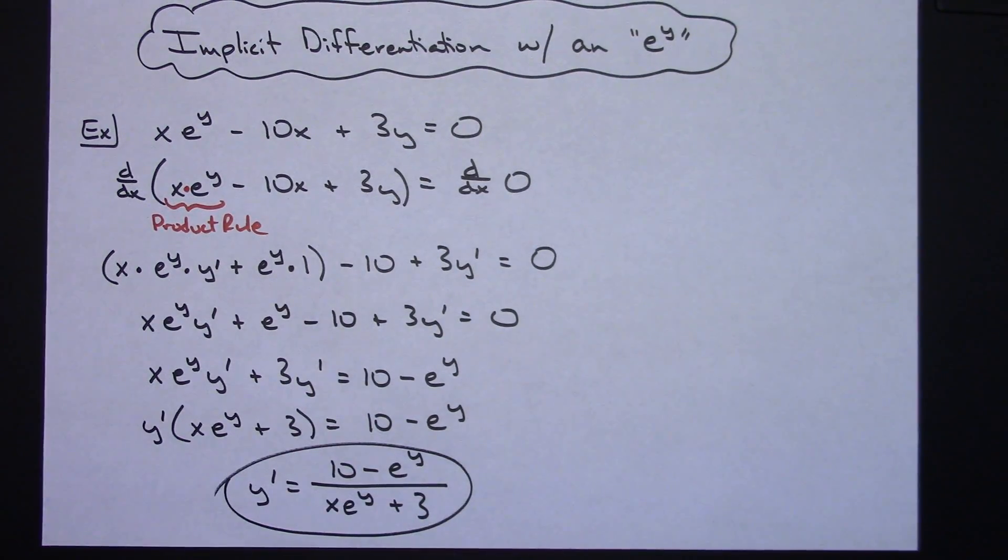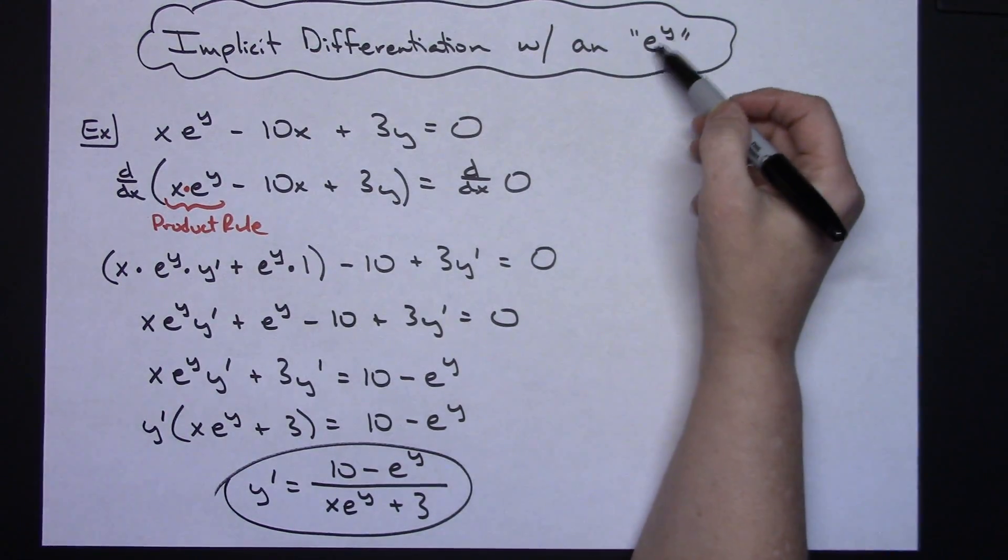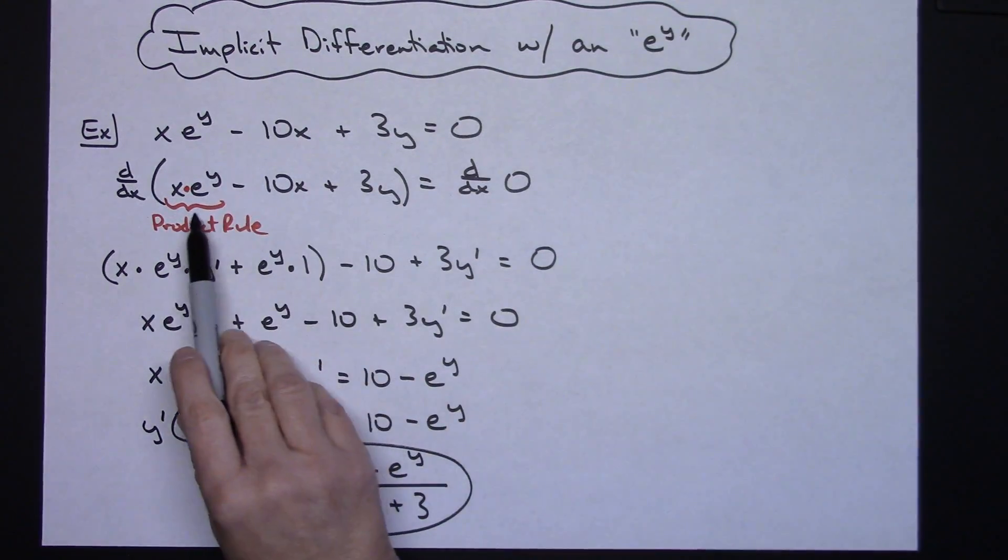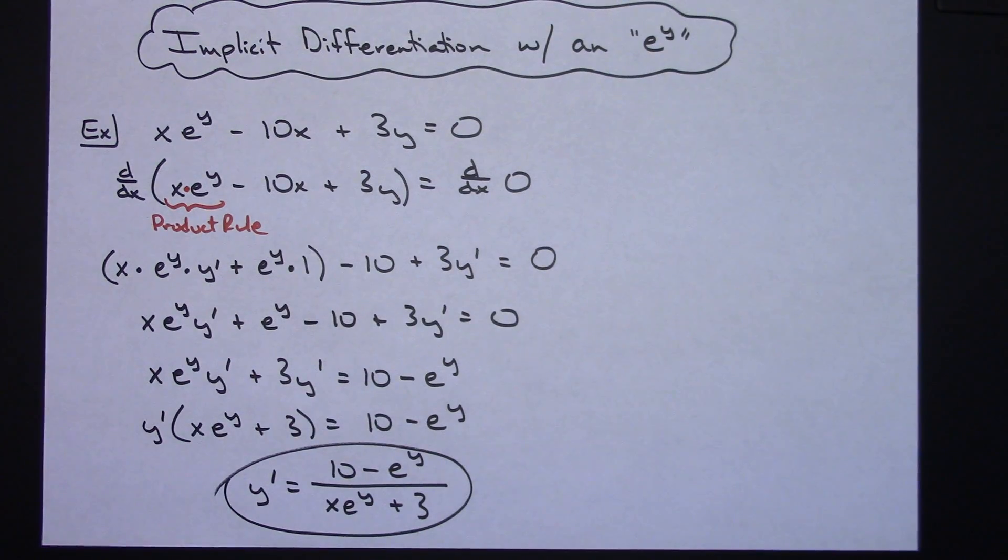So just one straightforward example of implicit differentiation with that transcendental function in there of the e to the y, implementing that product rule right there. Definitely, thanks for watching. Don't forget to subscribe to the channel, and if you'd really like, please share with your friends.